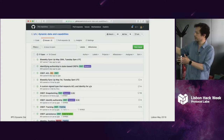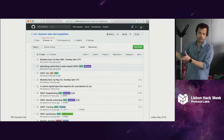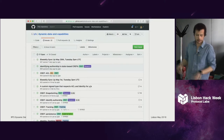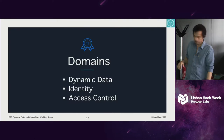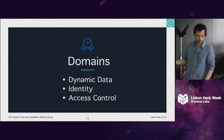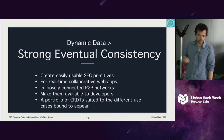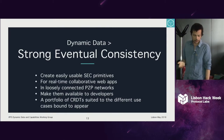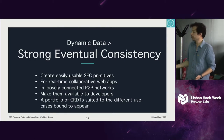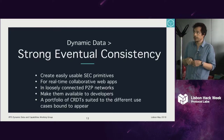This is where it materializes the things that we're going to develop next. There are three domains for this group: dynamic data, identity, and access control. Right now we're still more focused on dynamic data — creating strong eventual consistency primitives for real-time collaborative web apps that are in loosely connected peer-to-peer networks.